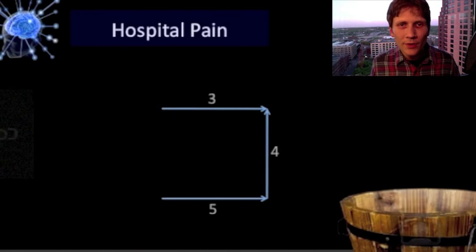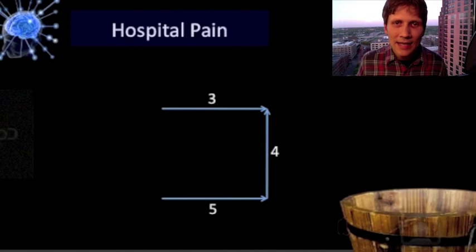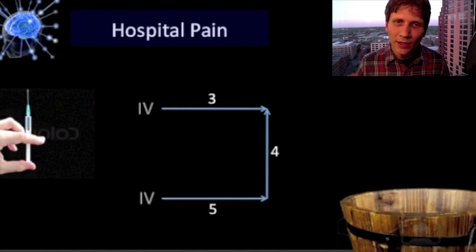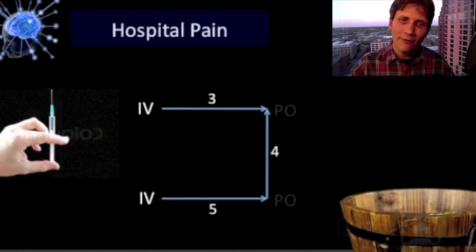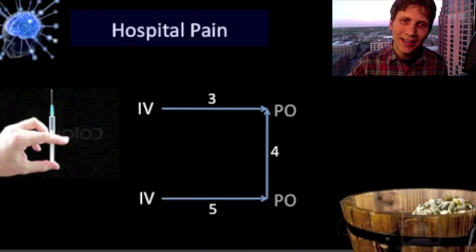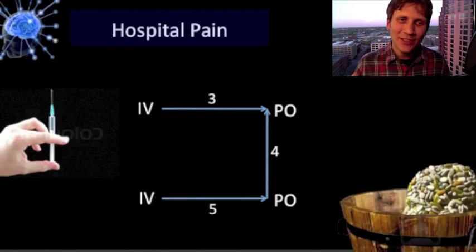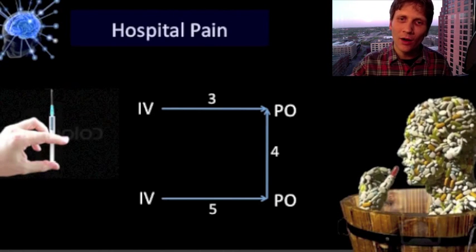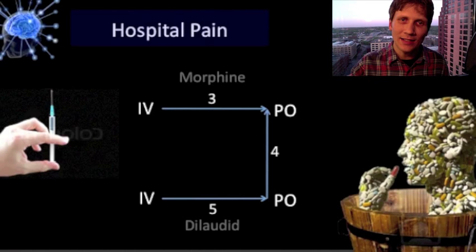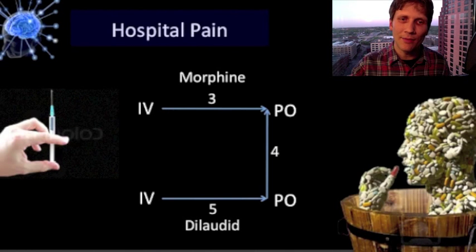If you look at this diagram, if you can memorize this, that's all you really need to know. There are three arrows with the numbers three, four, and five. IV is on the left and PO is on the right, morphine is on top and dilaudid is on the bottom.